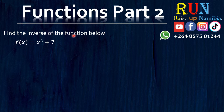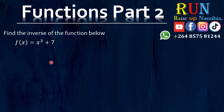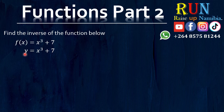Here we have: find the inverse of the function below. f of x is equal to x cubed plus 7. So how do we find the inverse? Rewrite it but replacing f of x with y. And then from there we exchange — wherever we see y we put an x, wherever we see x we put a y. And then from there we make y the subject of the formula.